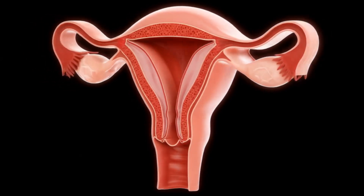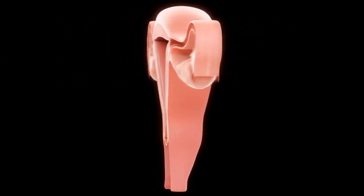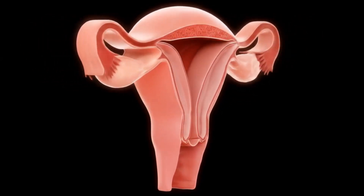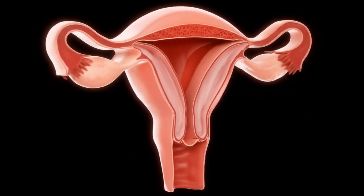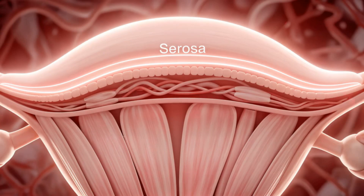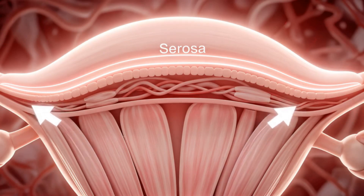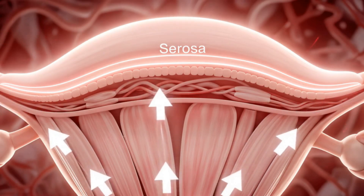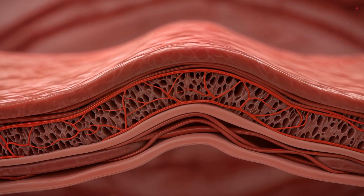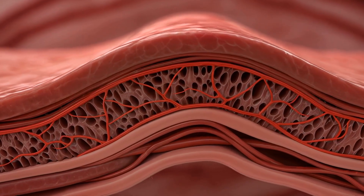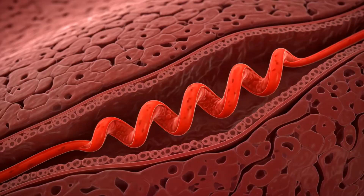The uterus is composed of three primary layers. The outer serosa protects the organ, while the middle myometrium is responsible for those powerful contractions. The inner lining, the endometrium, plays a crucial role in our story.